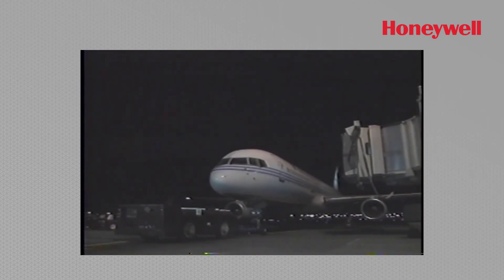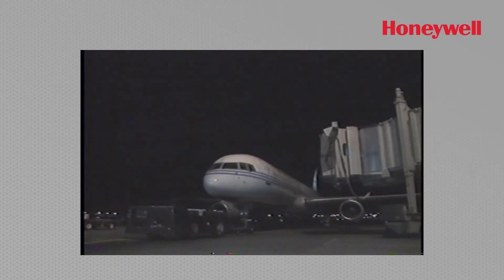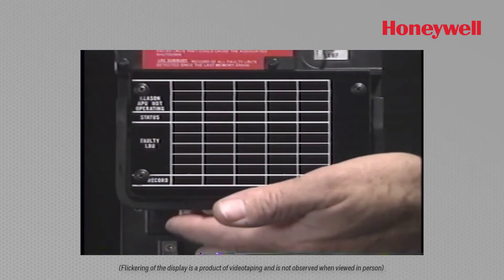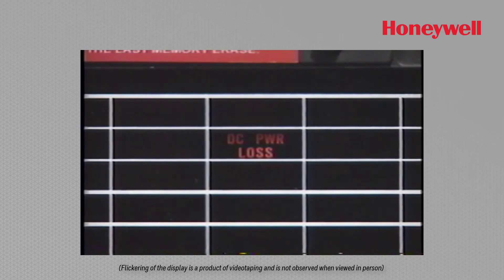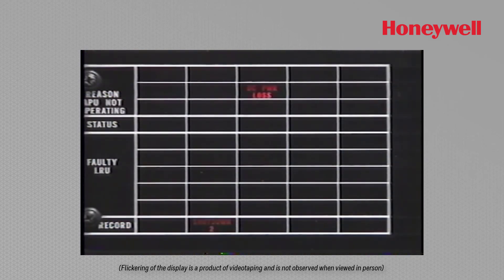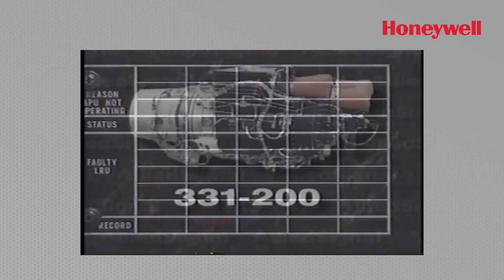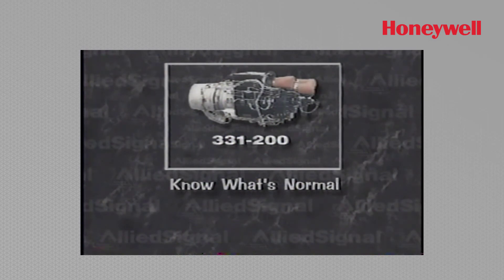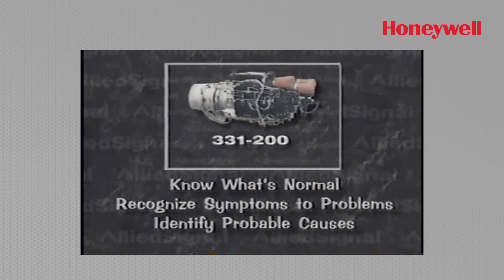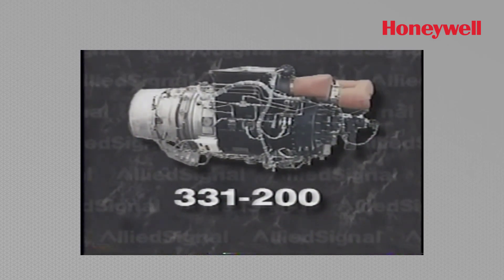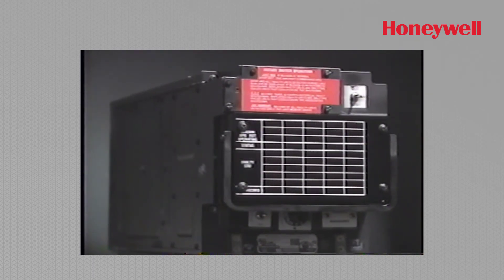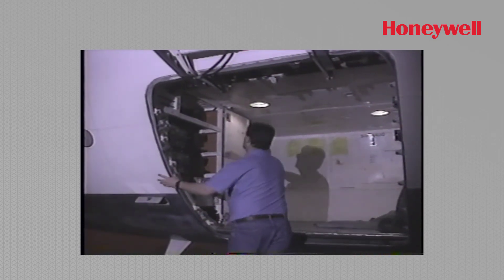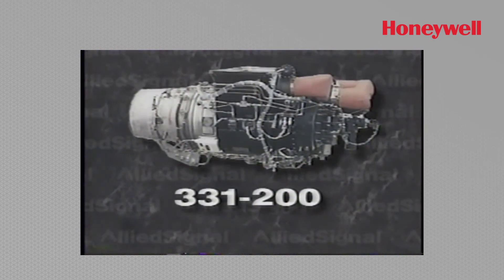A common problem during main engine start is when the APU shuts down while the aircraft is being pushed back from the gate. One suspected reason might be loss of DC power. Interrogating the unit in real time lets you know right away if it was a DC power loss, or it will bump it to shutdown 2 at your next start. In order to correctly troubleshoot your 331-200 APU system, you must first know what's considered normal. You must recognize symptoms to problems and be able to identify probable causes. The reliability and performance of your APU is directly related to understanding Dash 19 ECU operation and being able to correctly interrogate its built-in test equipment. You'll then be able to quickly and accurately troubleshoot your Allied Signal 331-200 APU.